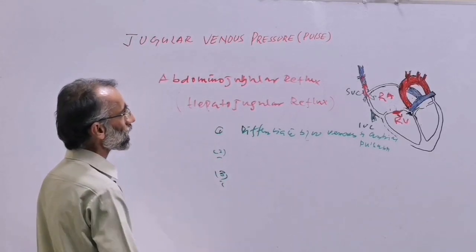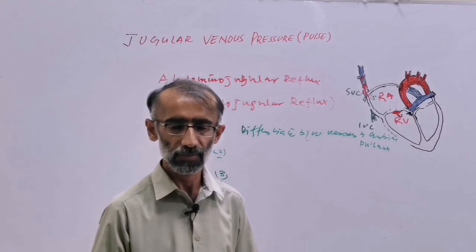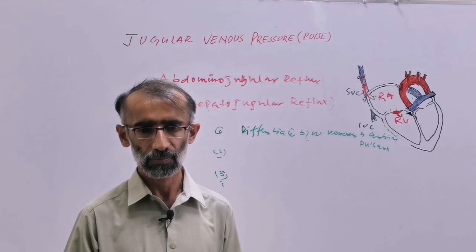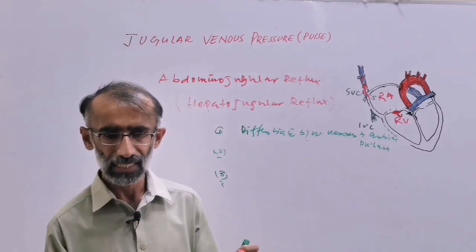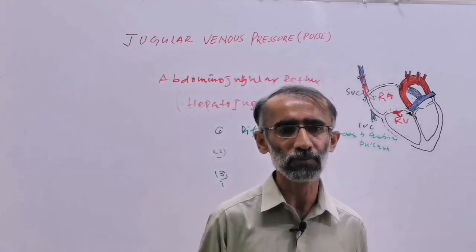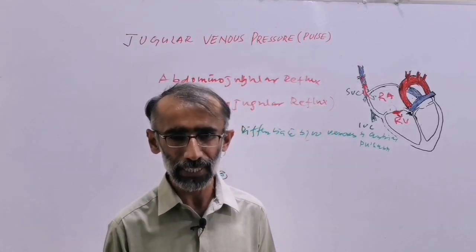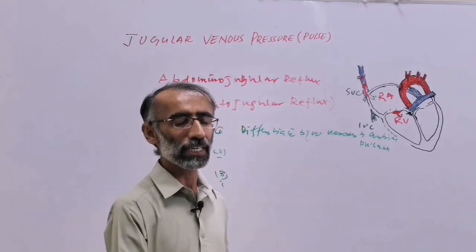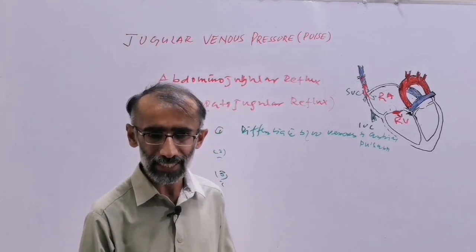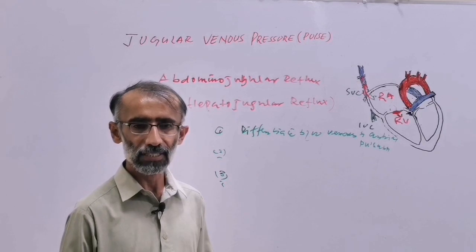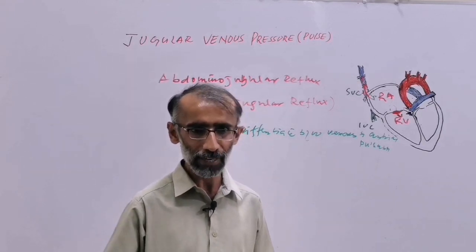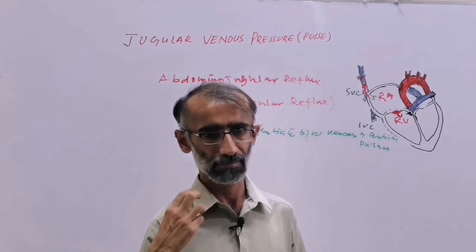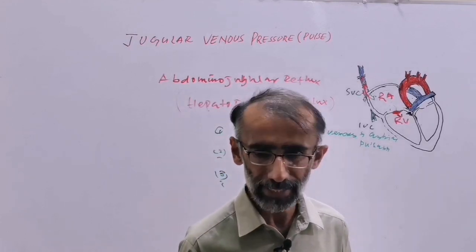The third clinical importance of abdominojugular reflux is to differentiate between obstructive and non-obstructive causes of raised JVP. In obstructive causes such as superior vena cava syndrome or Budd-Chiari syndrome, the JVP is never pulsatile — there is engorgement of the neck veins without pulsation.